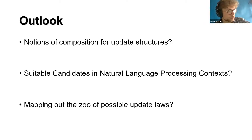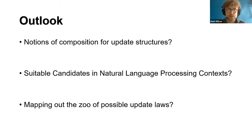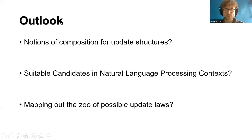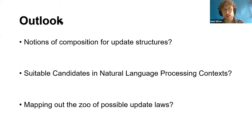In terms of the outlook, there are a few possibly sensible ways of composing update structures, so we're interested in the conditions needed to compose them and what the most sensible ways are. We're interested in coming up with more examples in natural language processing contexts. And we had some success with translating the words we wanted to say into formal maths, so we're interested in how far we can go with making zoos of update structures which say the various sentences we'd like to say, and we'd like to know which ones are stronger than others. Thanks very much.